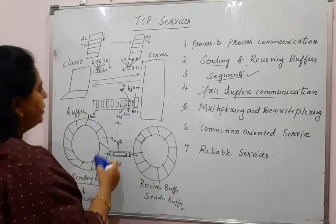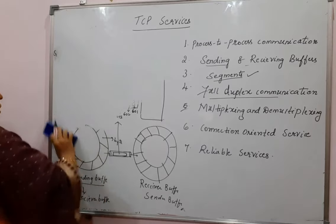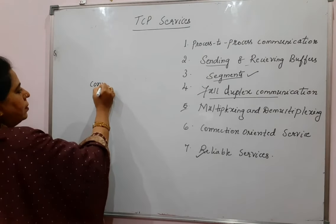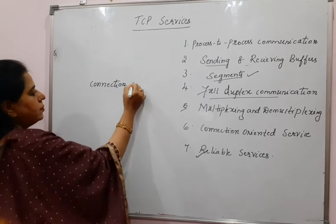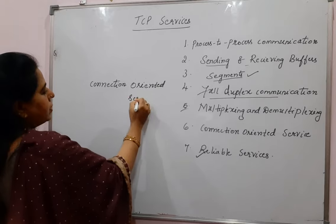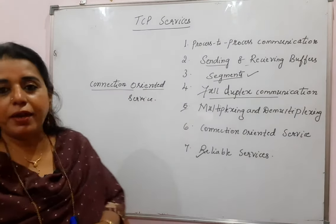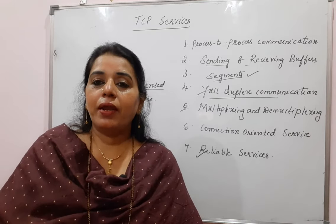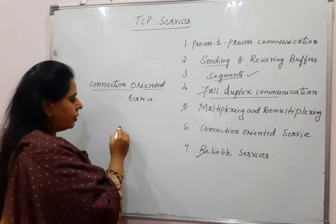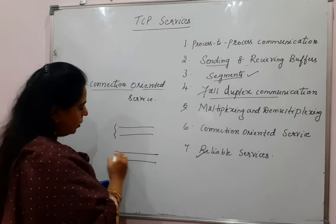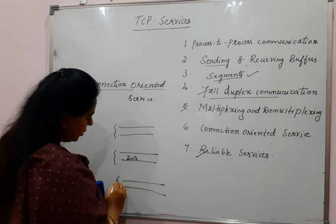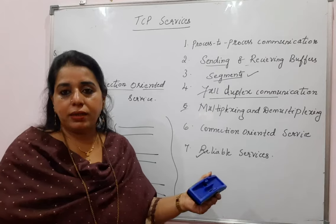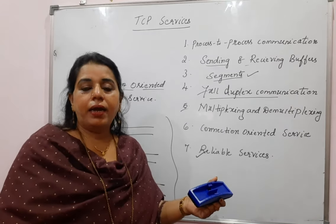The next service is connection oriented service. Transmission Control Protocol has a connection oriented feature, whereas UDP was a connectionless protocol. In TCP, before the data is sent, a connection is established. Then the data is sent, and after the data is sent successfully, the connection is terminated. So there are three phases whenever a protocol is connection oriented: establish the connection, send the data, and then terminate the connection. In UDP, the sender started sending data directly without any connection establishment.